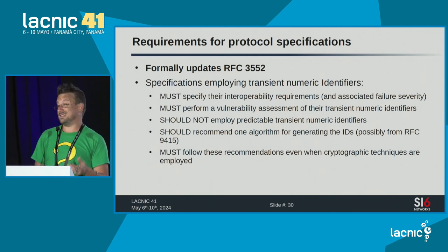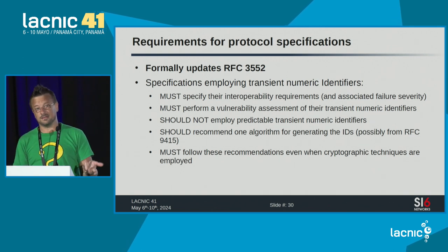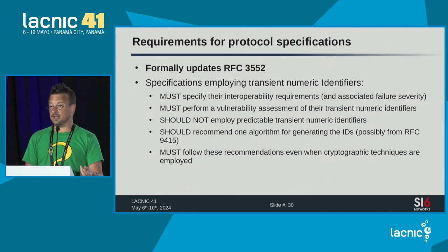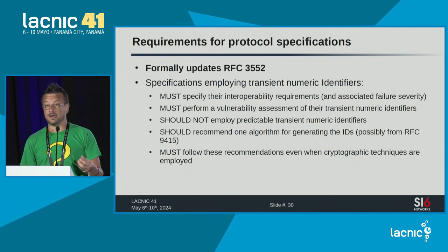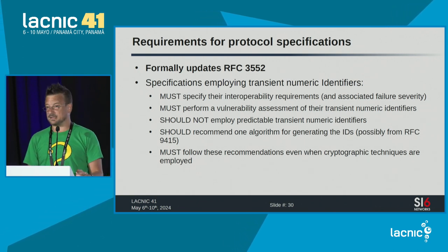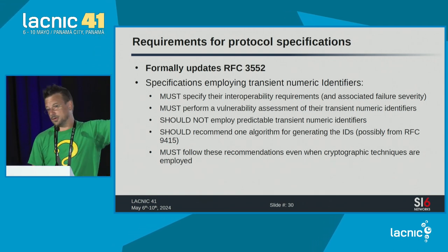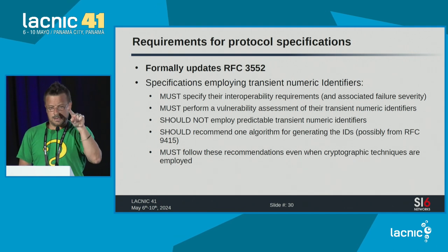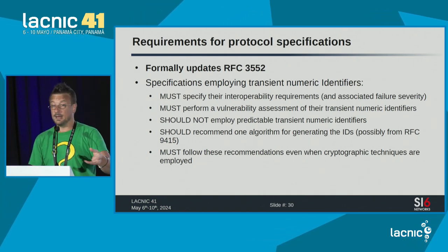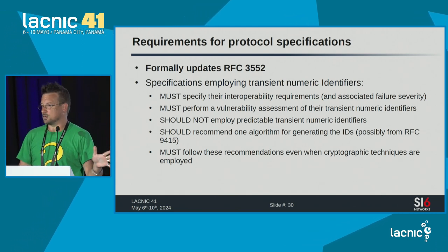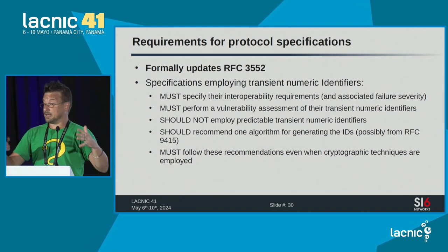RFC 9416 introduces the following requirements: if you have a protocol specification that uses transient numeric identifiers, you must specify their interoperability requirements — the properties the identifier needs to follow and the severity of failure if not met. You need to analyze the vulnerability: if predictable, what could an attacker gain? Third, unless you have a good reason, you shouldn't use predictable values. Fourth, all specifications must recommend one algorithm for generating the IDs — developers can do something better if they wish, but by default there must be instructions. Fifth, even protocols using cryptographic techniques must consider these recommendations.